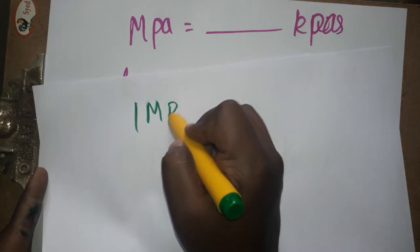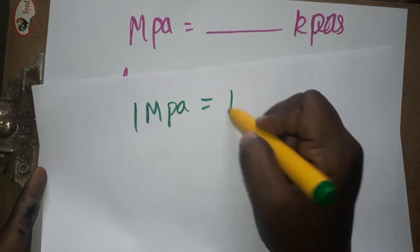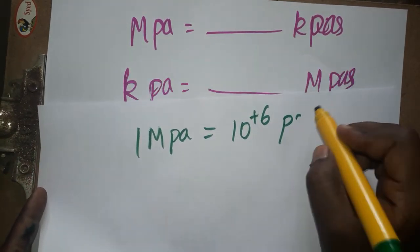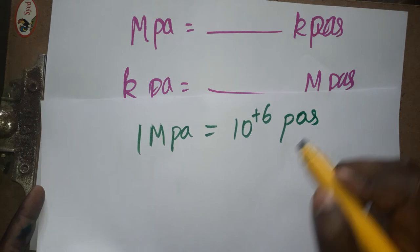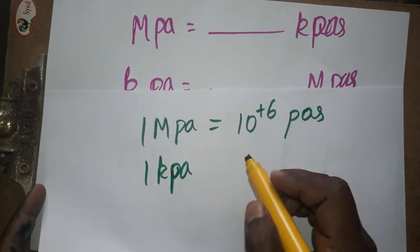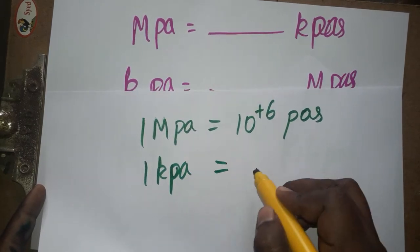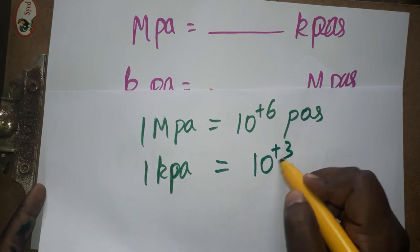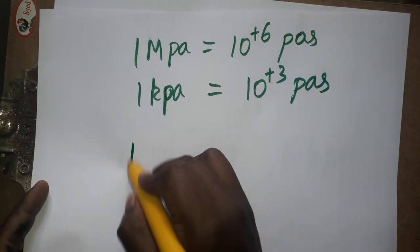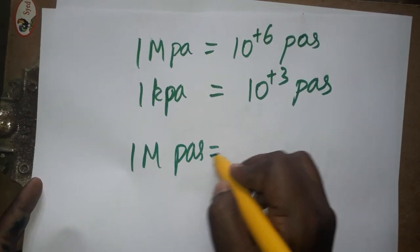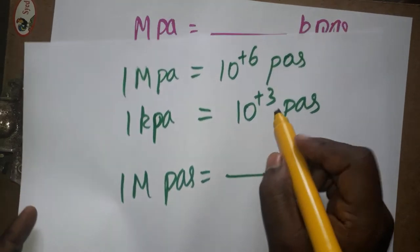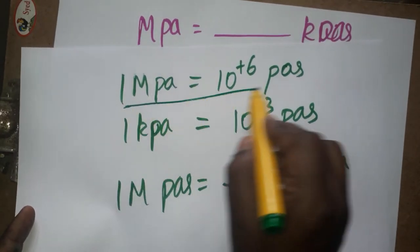1 megapascal is equal to 10 to the power of 6 pascals. 1 kilopascal is equal to 10 to the power of 3 pascals. So the question is: 1 megapascal is equal to how many kilopascals?